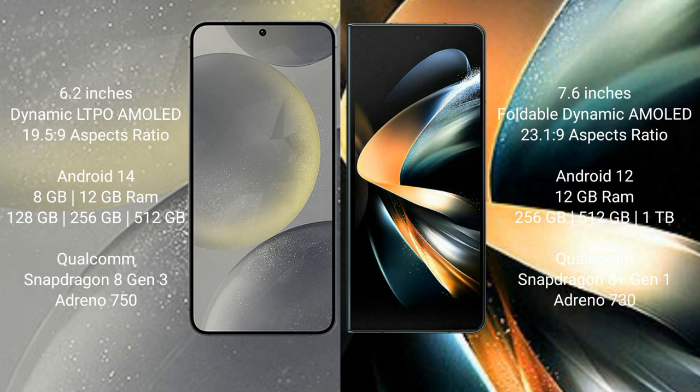Samsung S24 comes with 8GB and 12GB RAM, and 128GB, 256GB, 512GB internal storage. It is powered by the Qualcomm Snapdragon 8 Gen 3 processor with Adreno 750 GPU.